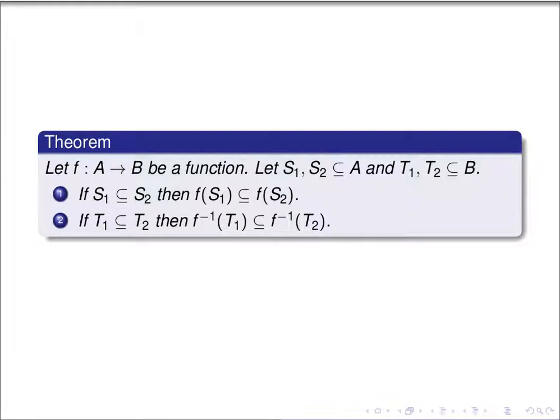The theorem we want to prove is the following. Let f be a function from A to B, let S1 and S2 be subsets of A, and T1 and T2 be subsets of B. First, if S1 is a subset of S2, then the image of S1 is a subset of the image of S2. And second, if T1 is a subset of T2, then the pre-image of T1 is a subset of the pre-image of T2.